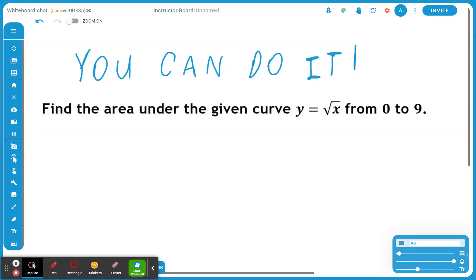Hi everyone, let's take a look at the following example. Find the area under the given curve y equal to the square root of x from 0 to 9.